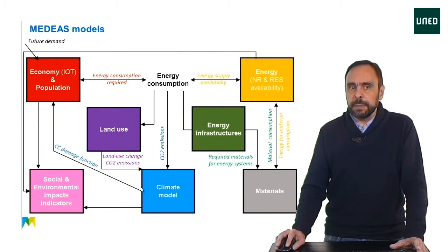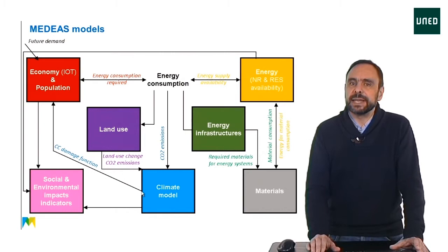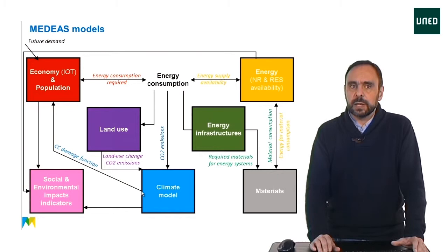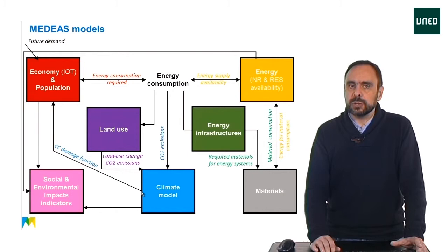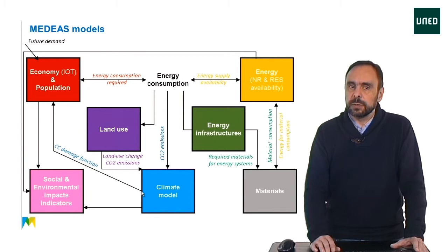The climate model projects the climate change levels due to the greenhouse gas emissions generated by human societies, which also feed back through a damage function. Materials are required by the economy, and MEDEAS especially tracks the material requirements for the construction, operation and management of the energy facilities. The land use model mainly accounts for the land requirements of renewable energies. The social and environmental impacts model translates the biophysical results of the simulation into metrics related with social and environmental impacts, contextualizing the implications for human societies in terms of well-being.